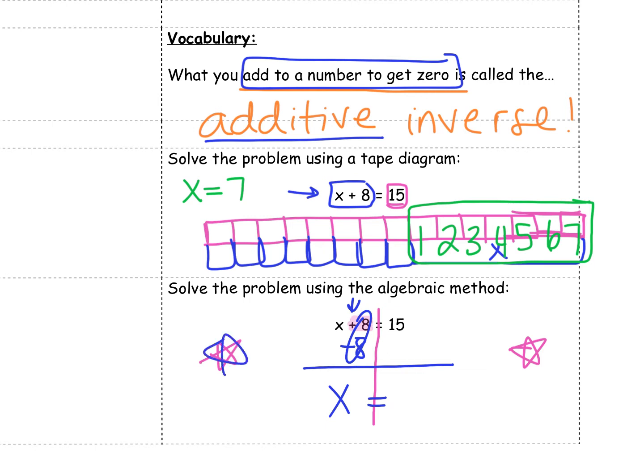But if I do it to the left side, I have to do it on the right side. So I'm going to subtract 8. And now I just have a math problem to solve. 15 minus 8 is 7. So I figured out mathematically, x equals 7.